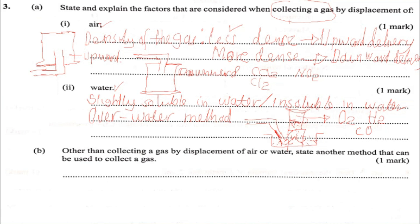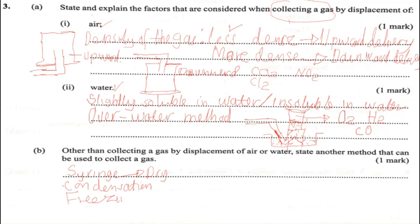Now the next question: other than collecting a gas by displacement of air or water, what other methods can be used? You can also collect a gas using a syringe — mostly used for dry gas that has already been passed through a drying agent. Another method is by condensation. You can also use freezing, or liquefaction, and so on.